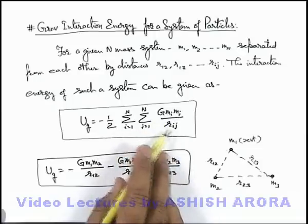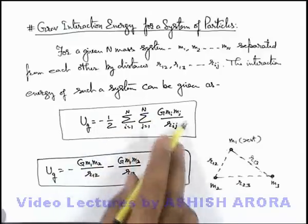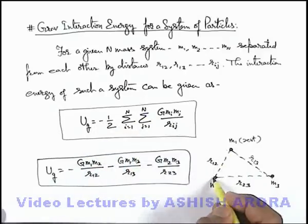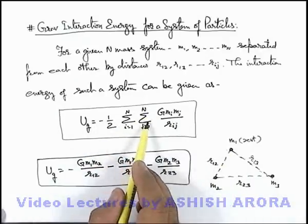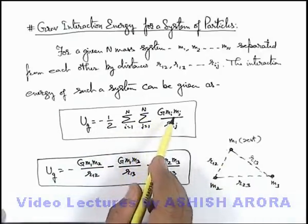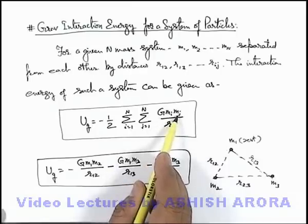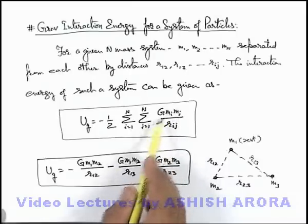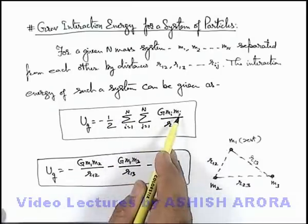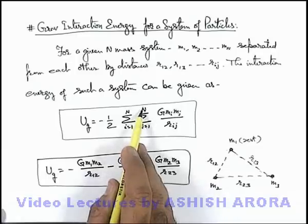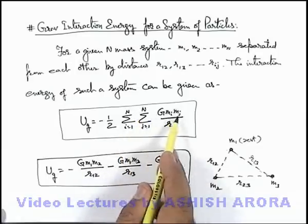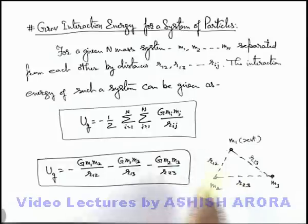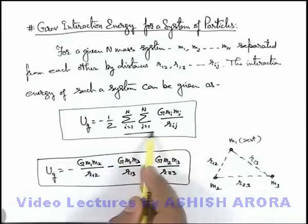And in this expression you can see again we are doing the same. G m1 m2 by r12 gives us the gravitational potential energy between particles 1 and 2. But if we use this sigma summation and we take mi mj, in this situation you can see i will vary from 1 to n, j will also vary from 1 to n. So in this situation, all pair of particles will be taken twice if we go for this double summation.